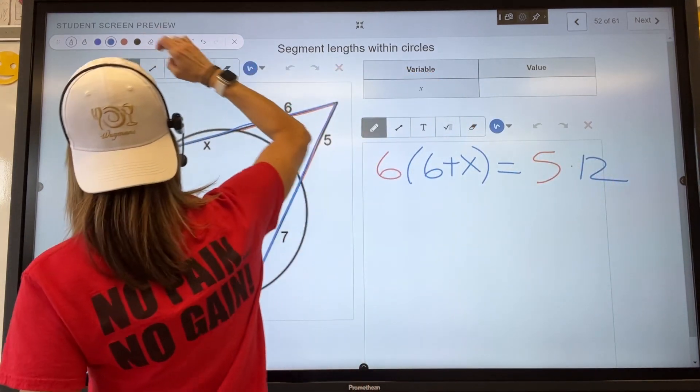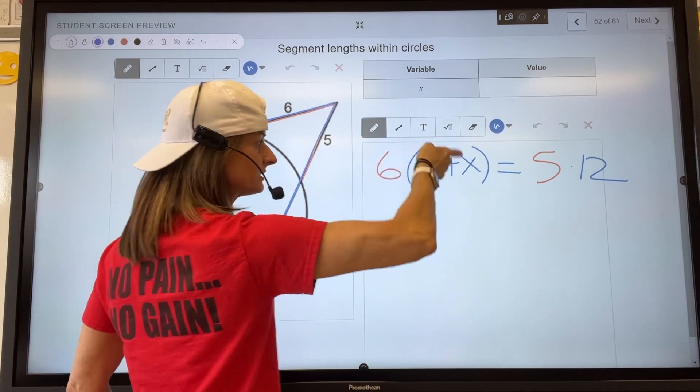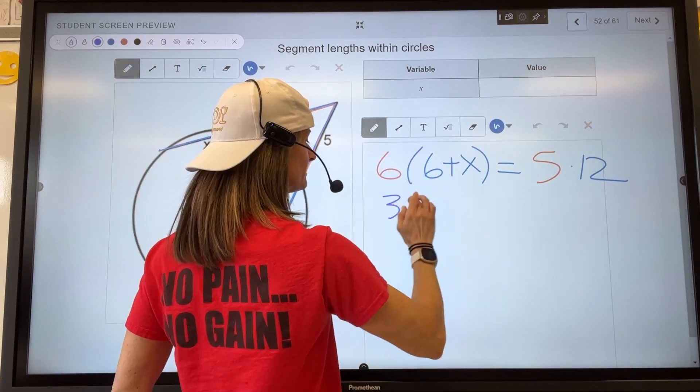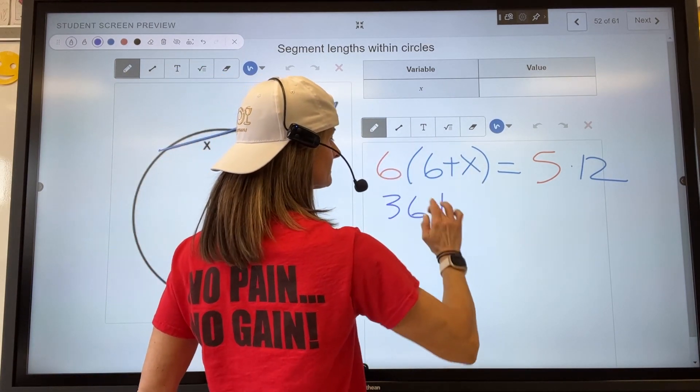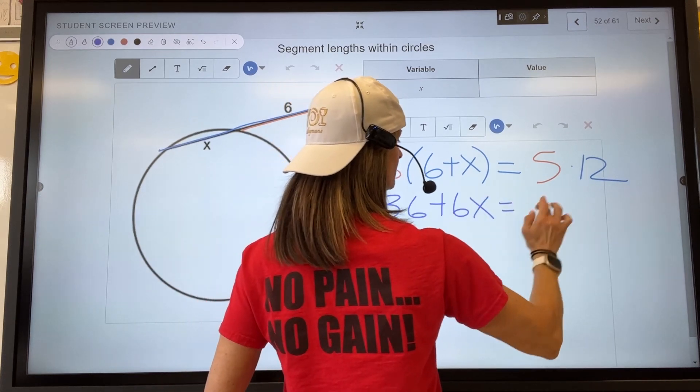Then you solve. Distribute, 6 times 6 is 36, 6 times x is 6x, equals 60.